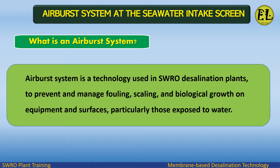What is an airburst system? An airburst system is a technology used in SWRO desalination plants to prevent and manage fouling, scaling, and biological growth on equipment and surfaces, particularly those exposed to water.